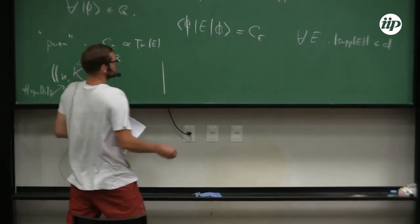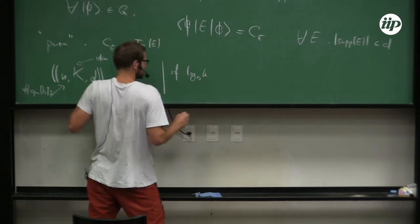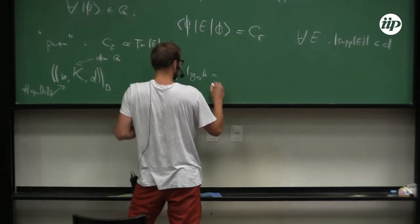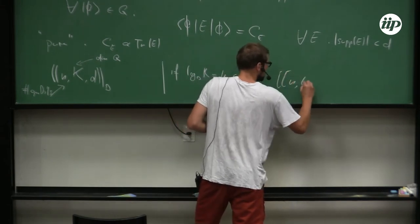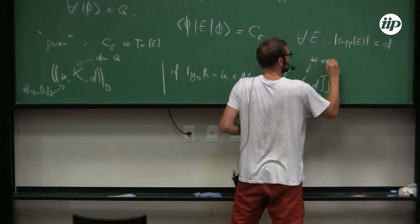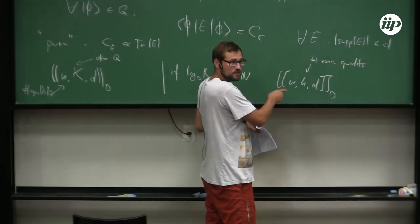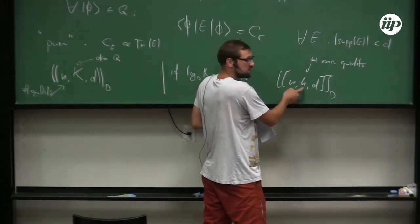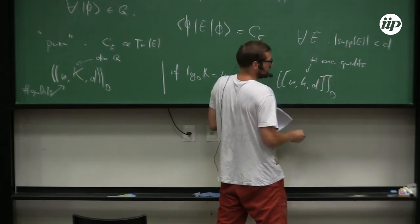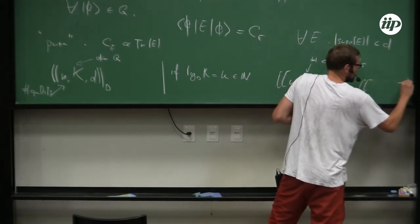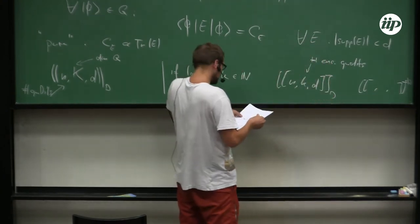We use the notation [[N, K, d]]_D for such codes, where N is the number of parties, K is the dimension of the subspace, d is the distance, and D is the local dimension. If the dimension of the subspace is an integer power of the local dimension — so if log_D(K) = k — then we use the notation [[n, k, d]] where k is the number of encoded qudits. I'll label all codes with an integer number of encoded qudits this way; if it's a stabilizer code I'll mark it separately.